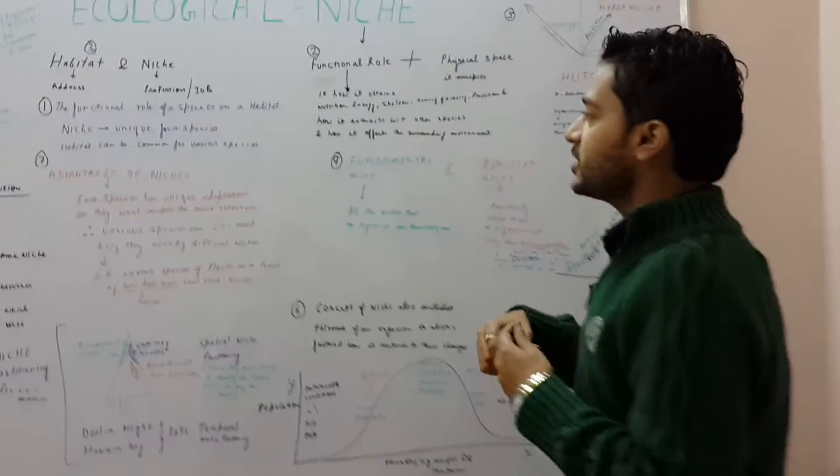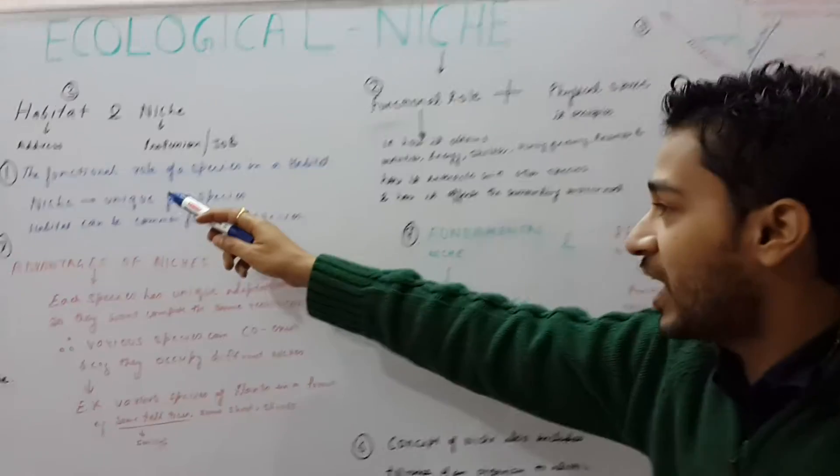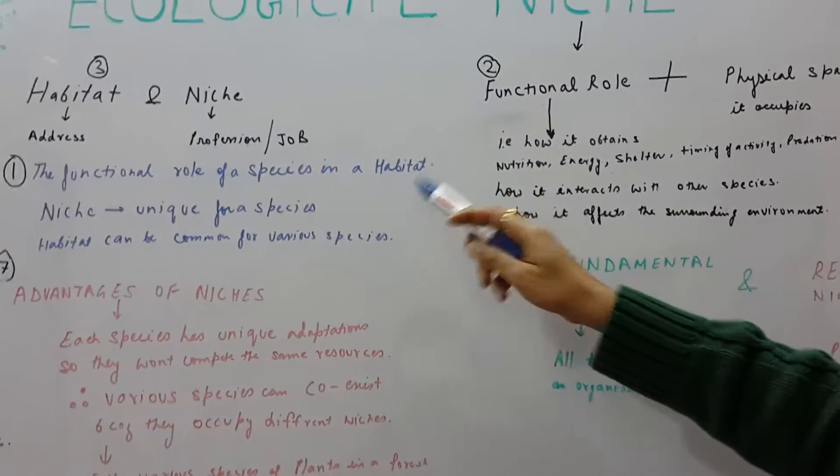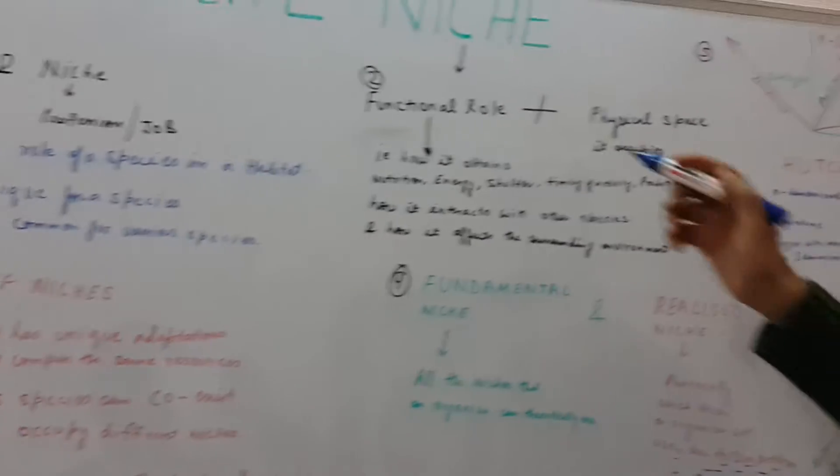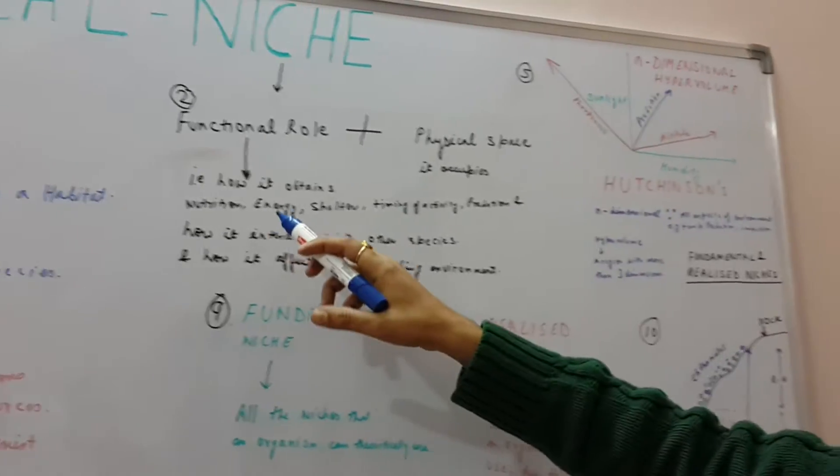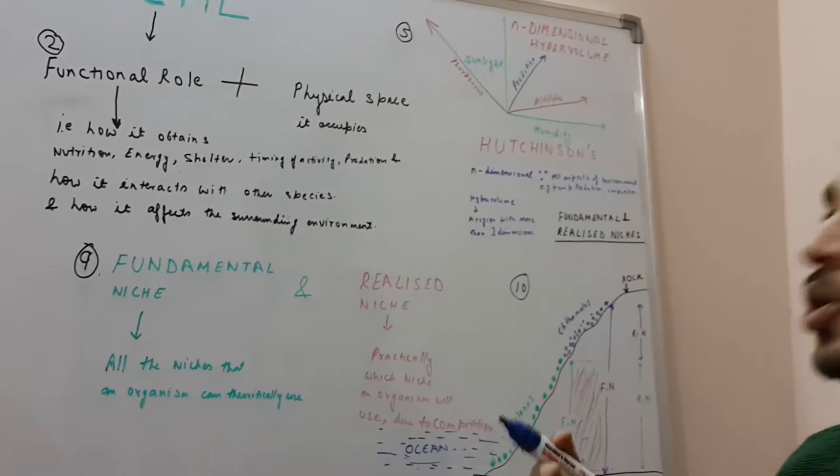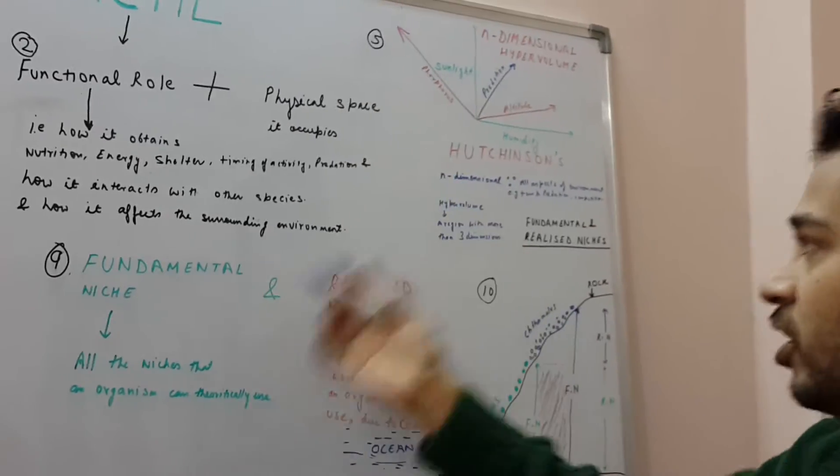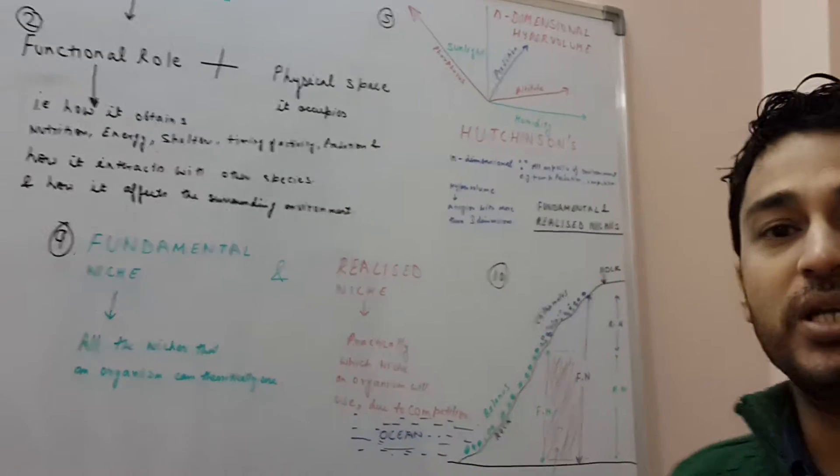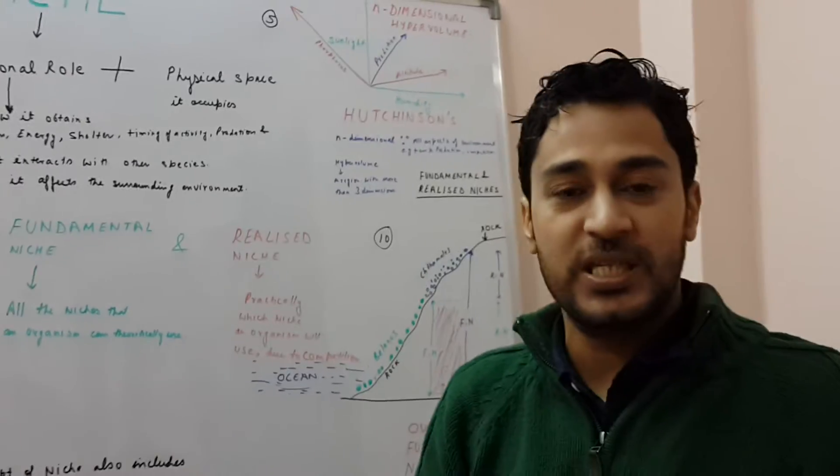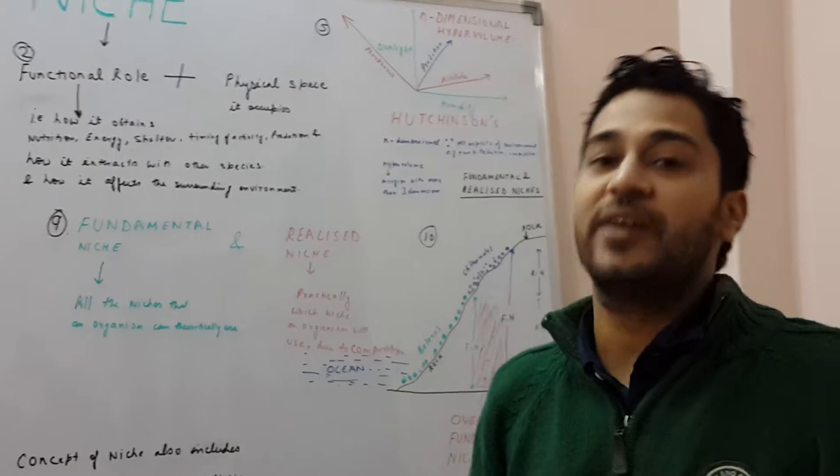An ecological niche refers to the functional role of a species in a habitat. Now, what I mean by the role? The functional role refers to how it obtains its energy, nutrition, shelter, timing of activity, predation, and how it interacts with other species and how it influences the environment.